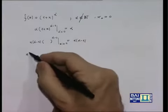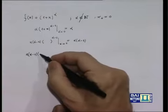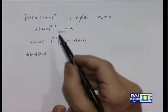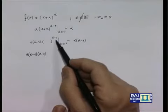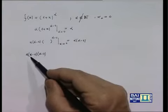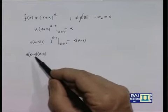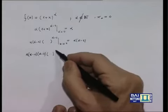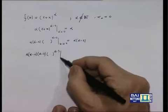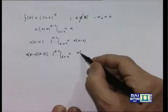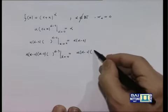Facciamo un'altra derivata: viene alfa(α-1)(α-2), quindi come si vede la derivata seconda ha il prodotto di due fattori, la terza di tre fattori. A partire da alfa ogni volta scalo di un'unità: alfa, alfa-1, alfa-2; qui ho (1+x)^(α-3). Calcolando il tutto per x uguale a 0 trovo alfa(α-1)(α-2).